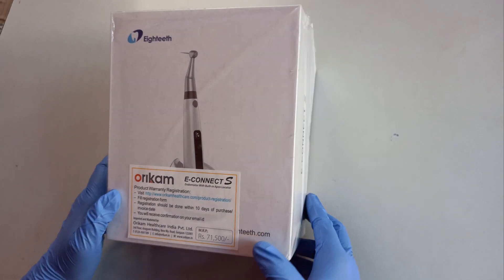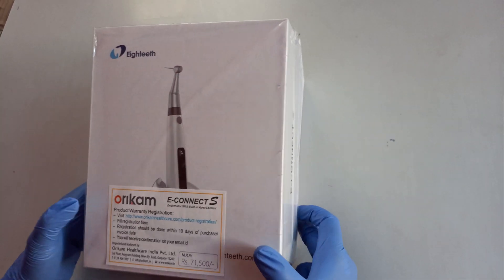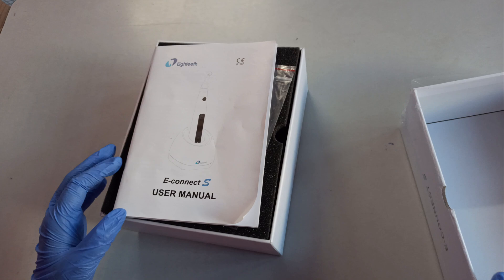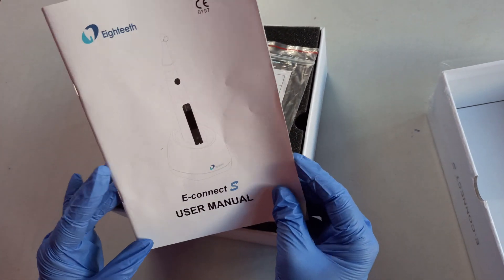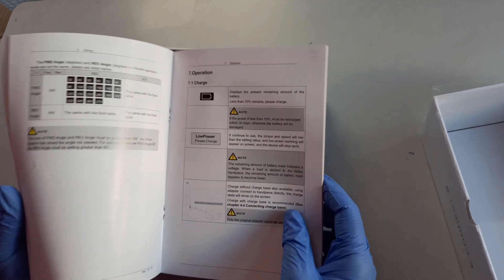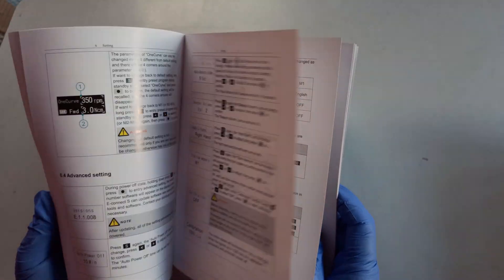This motor comes in a big white box with E-Connect S labelled on it. Let's unbox it. Inside the box, you will find an E-Connect S user manual with information about all the parts and functioning of the motor.